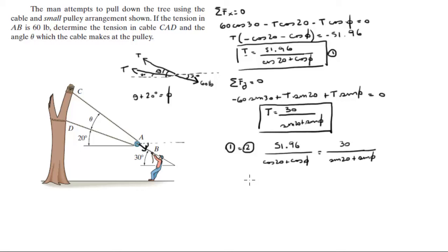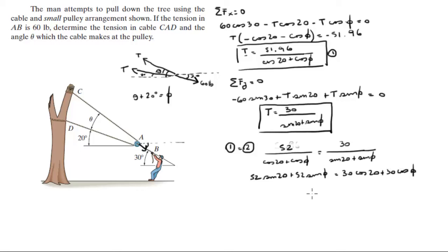Cross-multiplying and approximating 51.96 as 52: 52 sine of 20 plus 52 sine of phi equals 30 cosine of 20 plus 30 cosine of phi. Evaluating the known terms gives 17.8 plus 52 sine of phi equals 28.2 plus 30 cosine of phi.